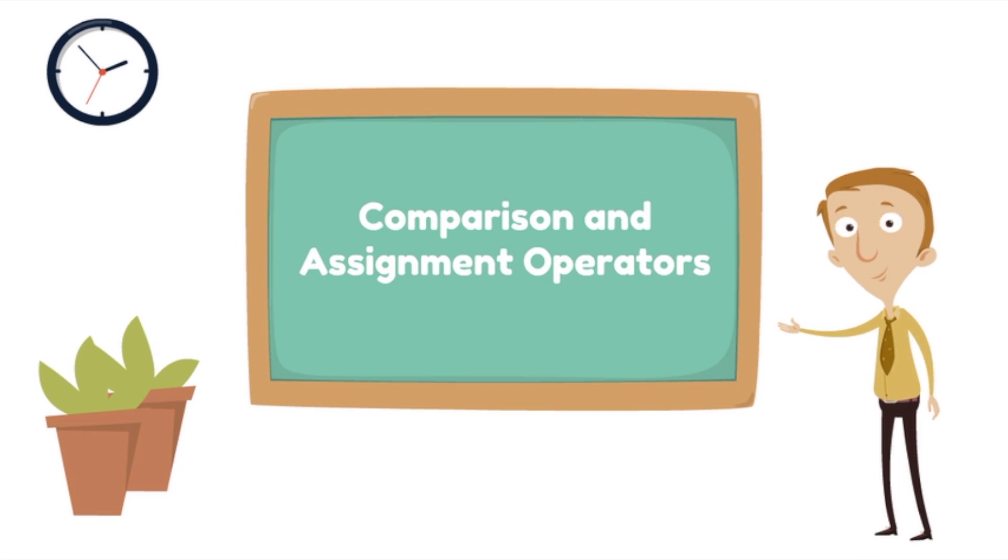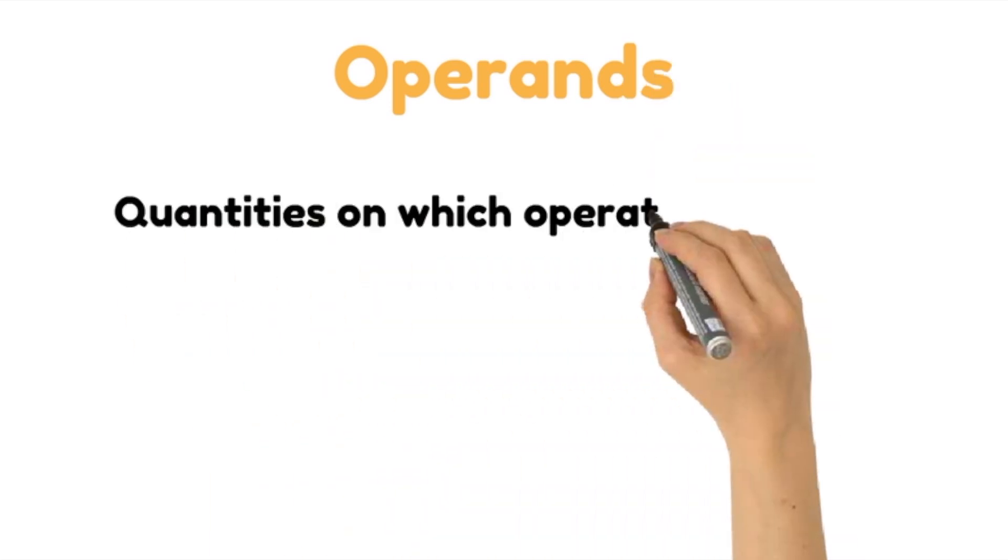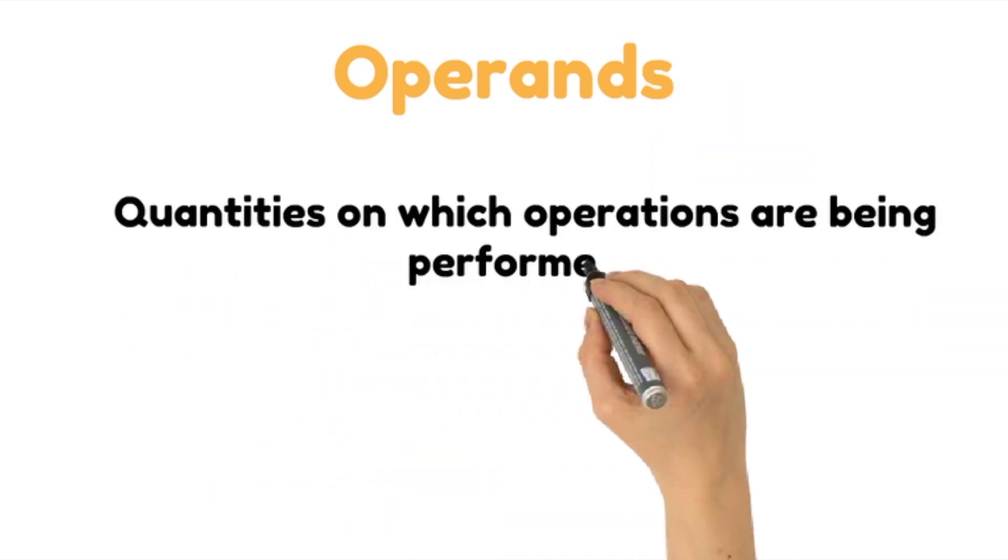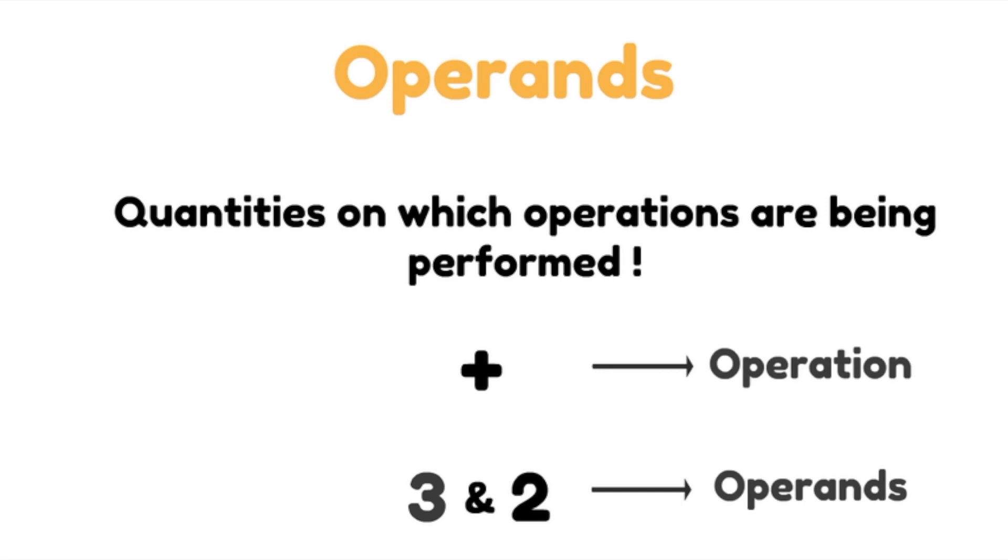Before we jump into the subject, let's understand operands. Operands are quantities on which operations are being performed. Let's say we are adding 3 and 2. Here addition is the operation, 3 and 2 are the operands.